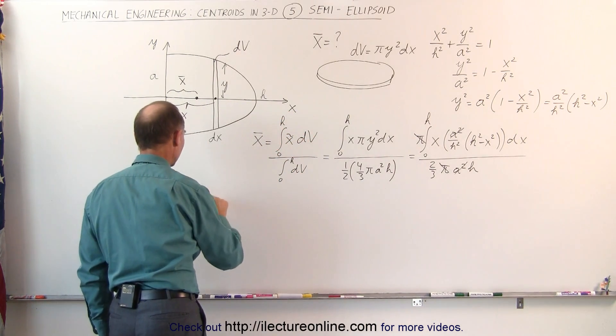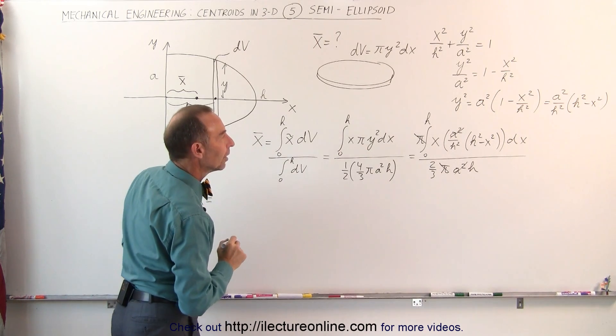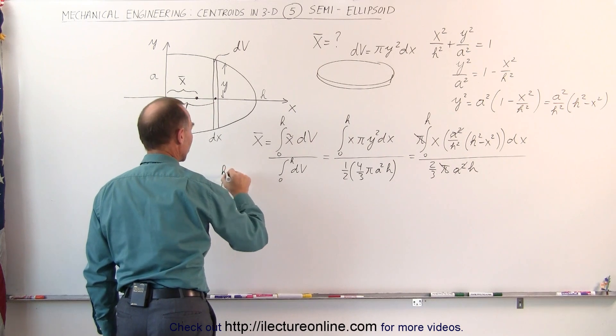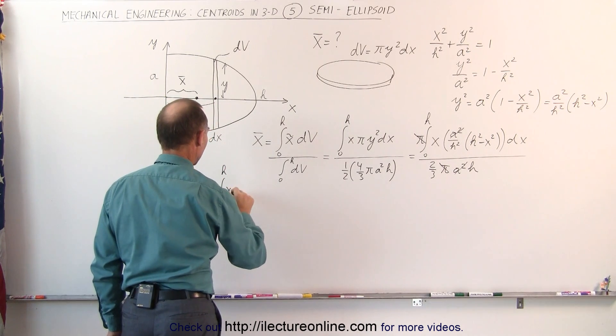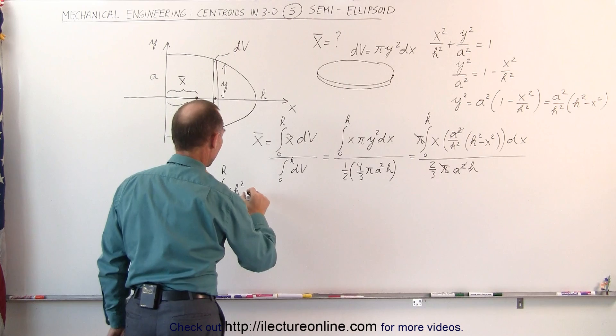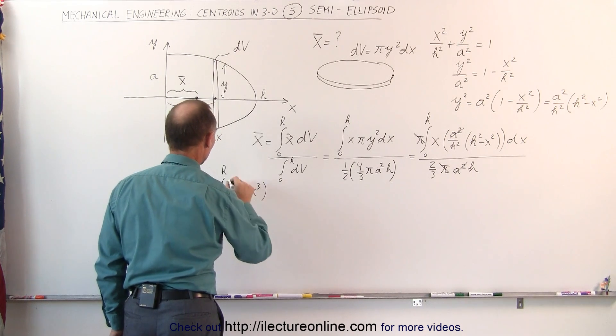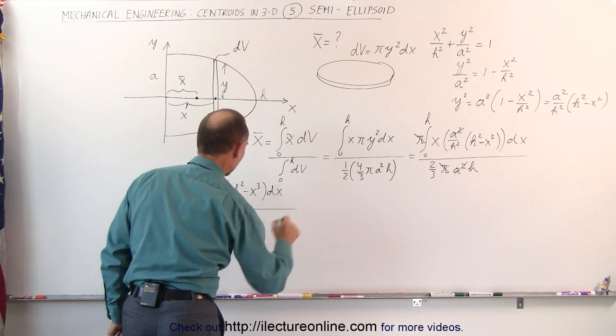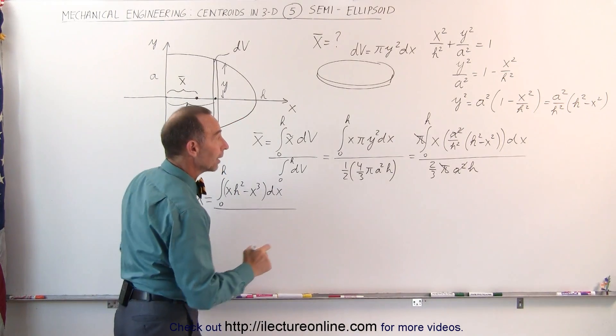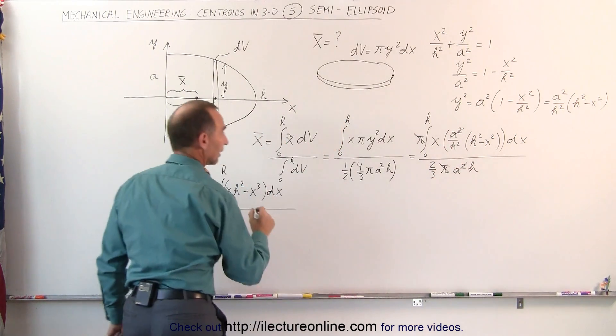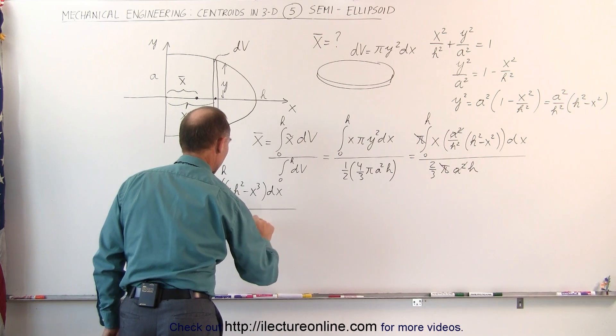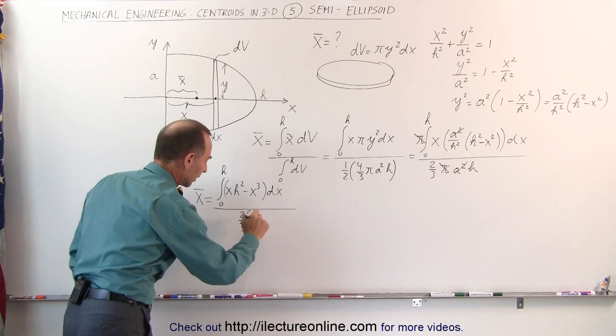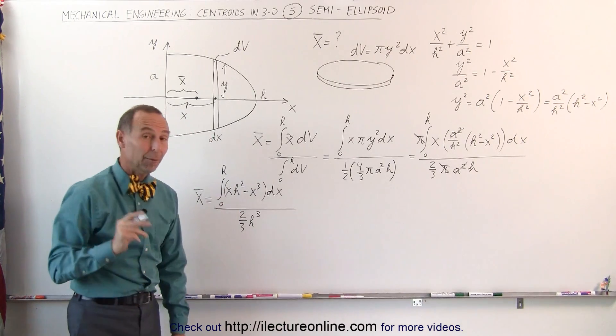The x-coordinate of the centroid therefore becomes, we're going to multiply x times this. That gives us the integral from 0 to h of x(h² - x³)dx. And in the denominator, we now are going to get the h² is going to come down. That gives us 2/3 h³. Let's make that a better looking three. There we go. Now we're ready to integrate.